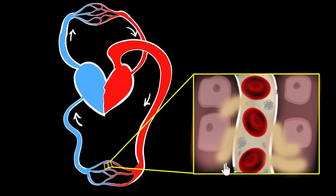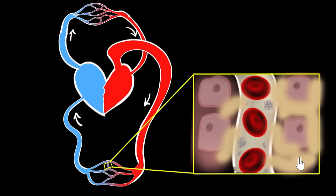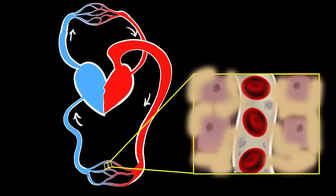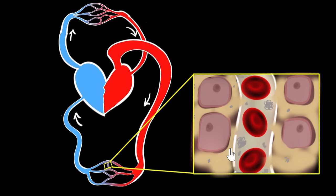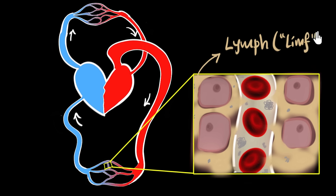We won't call this blood, because blood contains plasma with proteins, and RBCs, WBCs, and everything. What oozes out is just the plasma. RBCs can't ooze out because the holes are too small for them. The plasma comes out along with a little bit of small proteins — not big ones. This plasma that oozes out and fills up the space between the cells is what we call the lymph, pronounced with an F — lymph.